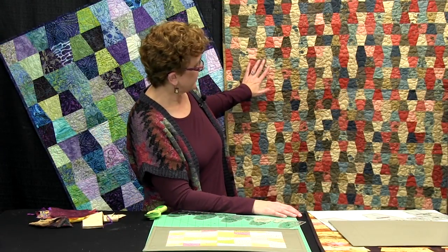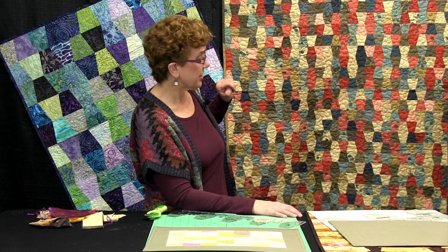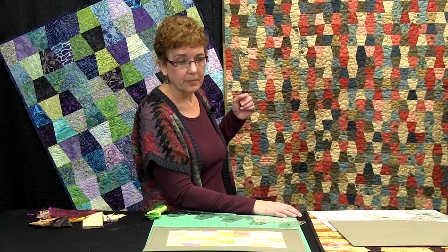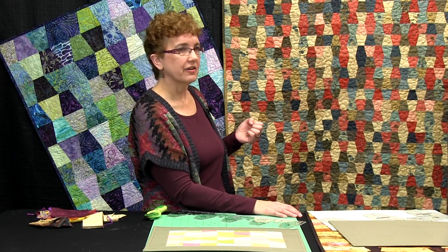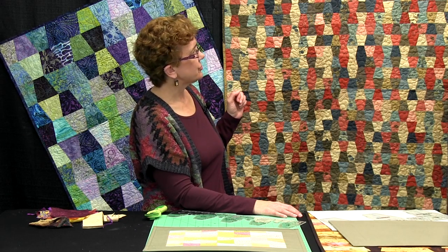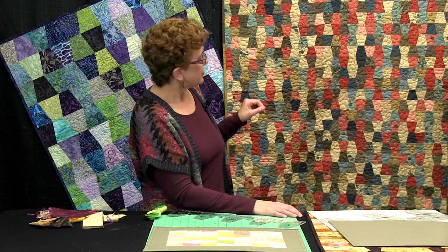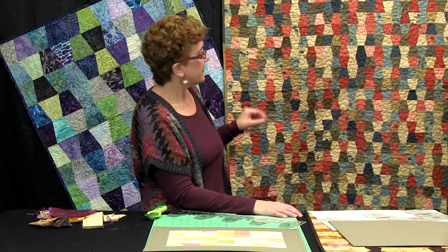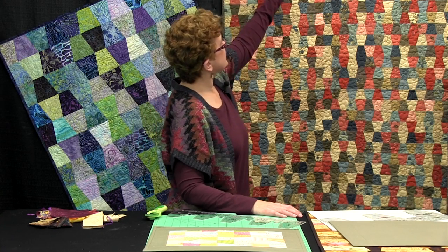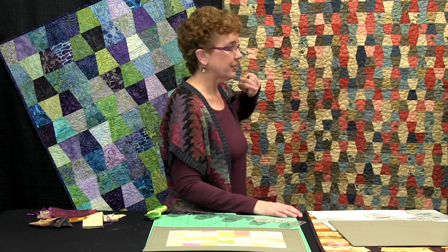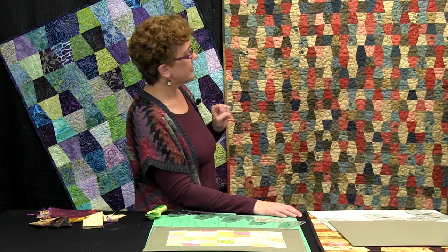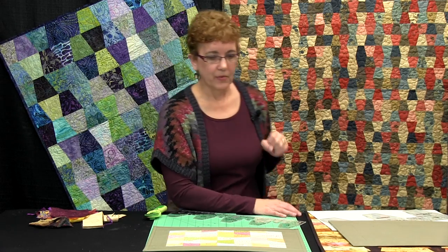Behind me here, this is all made from a jelly roll, or a bally pop, or any collection of 40 to 42, 2½ inch strips. You saw how quickly we can cut those up. Then it's just sewing straight seams, putting these all together in a row, and then sewing the rows together, and you've got a nice size lap quilt ready to go.